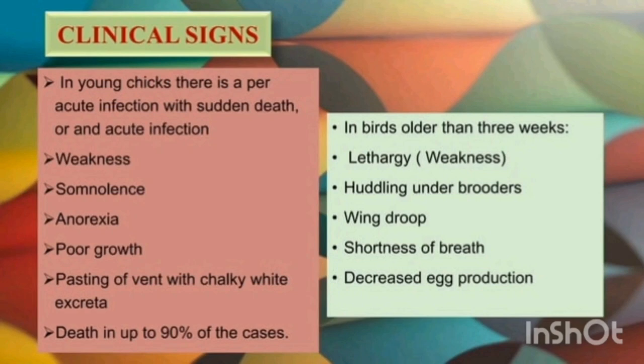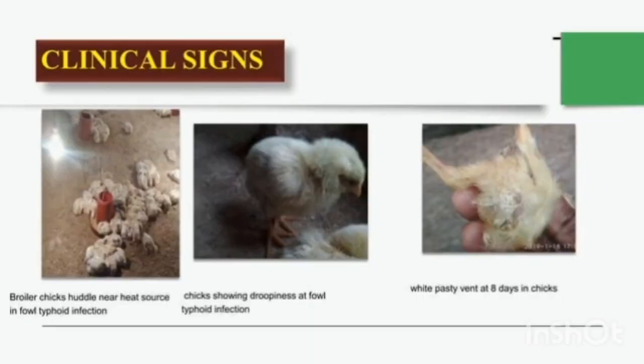The mortality rate is up to 90%. In older birds, which are more than 3 weeks of age, it can cause lethargy, huddling under the brooders, wing droop, shortness of breath, and decreased egg production. Here you can see the birds huddling under the heat source, affected with fowl typhoid, showing droopiness and white pasty vent.